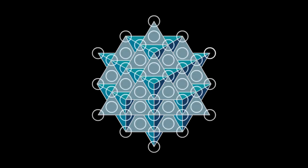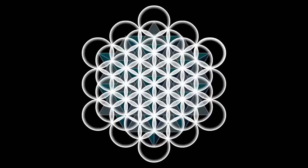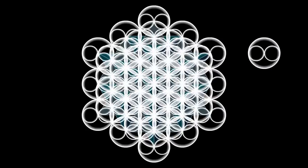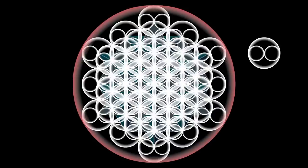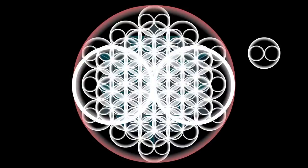If this structure is the male component, then the female component would be the toroidal flow between and around all of the points. Imagine that every sphere in and of itself is a torus, each with a singularity of its own, but the larger fractal is a larger sphere also with a singularity to which all of the other toroids are connected.